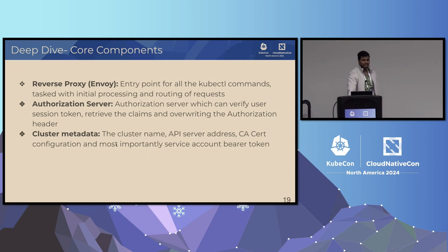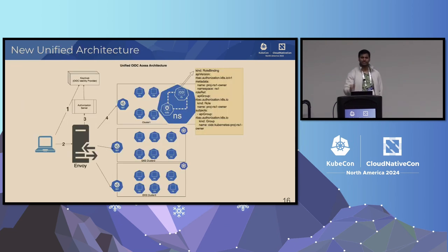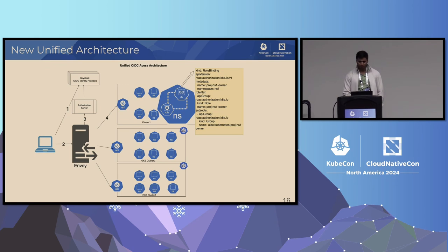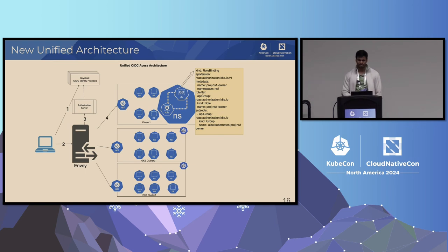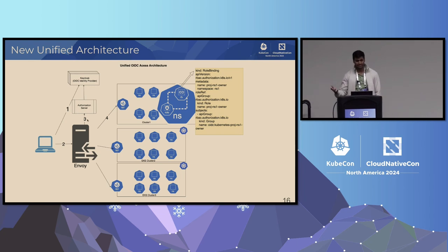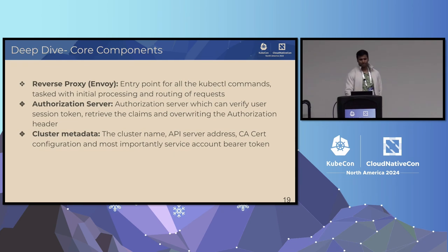In the newer flow, the user still runs kubectl get pods, goes to Keycloak, gets the user session token, but the kubectl kubeconfig doesn't have details of the target clusters — it points to Envoy. Envoy forwards the request to the authorization server. The authorization server validates and decodes the user session token, retrieves user ID and groups, and overwrites it with the user impersonation headers Kubernetes is expecting, then responds back to Envoy. Envoy then connects to whatever the target cluster is. The three core components are: reverse proxy (Envoy), authorization server, and cluster metadata.